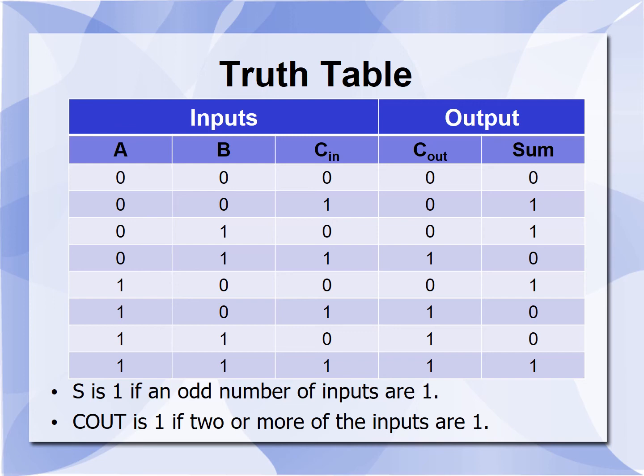When A=0, B=0, C=0: carry=0, sum=0. When A=0, B=0, C=1: carry=0, sum=1. When A=0, B=1, C=0: carry=0, sum=1. When A=0, B=1, C=1: carry=1, sum=0. When A=1, B=0, C=0: carry=0, sum=1. When A=1, B=0, C=1: carry=1, sum=0. When A=1, B=1, C=0: carry=1, sum=0. When A=1, B=1, C=1: carry=1, sum=1.